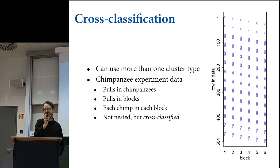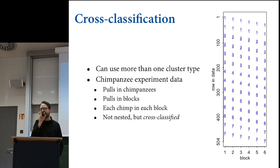The model I'm going to show you works for nested too. The nesting or cross-classification just comes from how you set up the ID numbers—whether each individual is unique within each block. That's just a matter of your data governance.